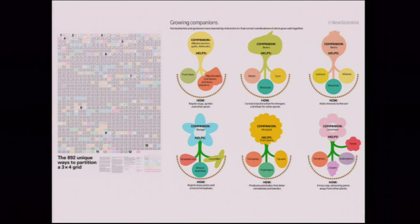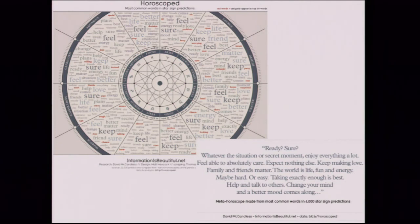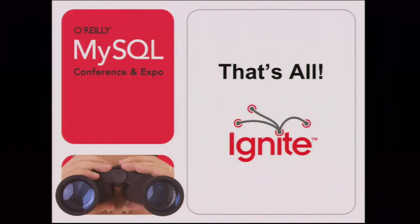And then some geeky data visualizations. In closing, the last slide is a data visualization of the most common words in star sign predictions. In the effort to save you time reading your predictions every day for the rest of your life, I will recite your metahoroscope made from 4,000 predictions. Ready? Sure. Whatever the situation or secret moment, enjoy everything a lot. Feel able to absolutely care. Expect nothing else. Keep making love. Family and friends matter. The world is life, fun, and energy. Maybe hard or easy. Taking... Wow. And the end.